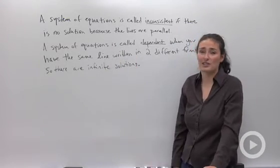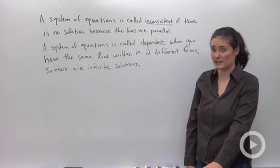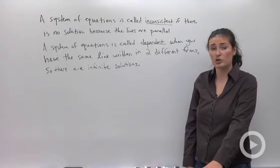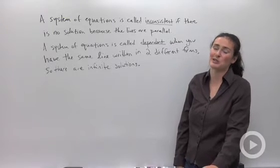First, a system of equations is called inconsistent if there is no solution because the lines are parallel. Remember, parallel means there's no slope. And a solution would be... parallel doesn't mean no slope. Parallel means they have the exact same slope, my fault.